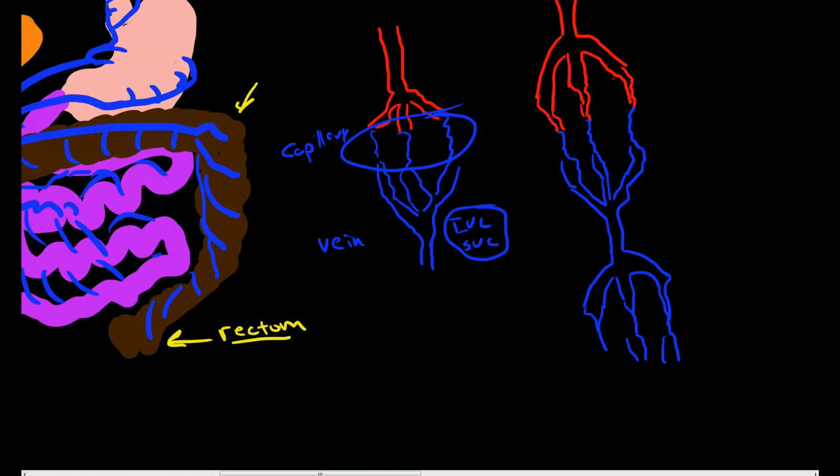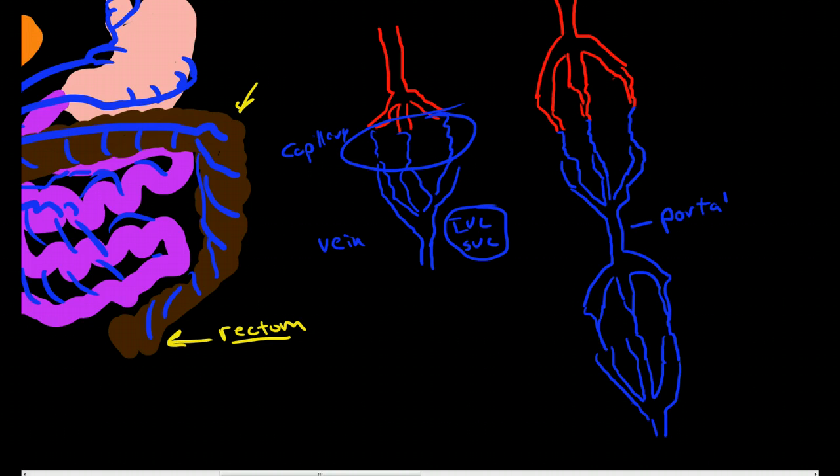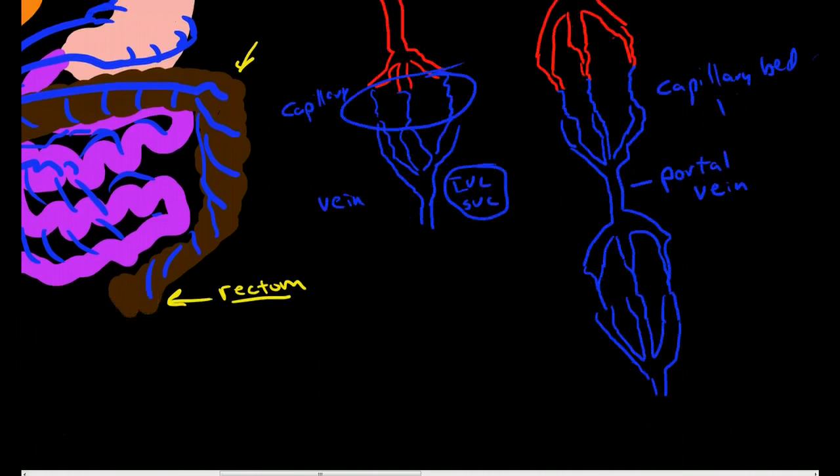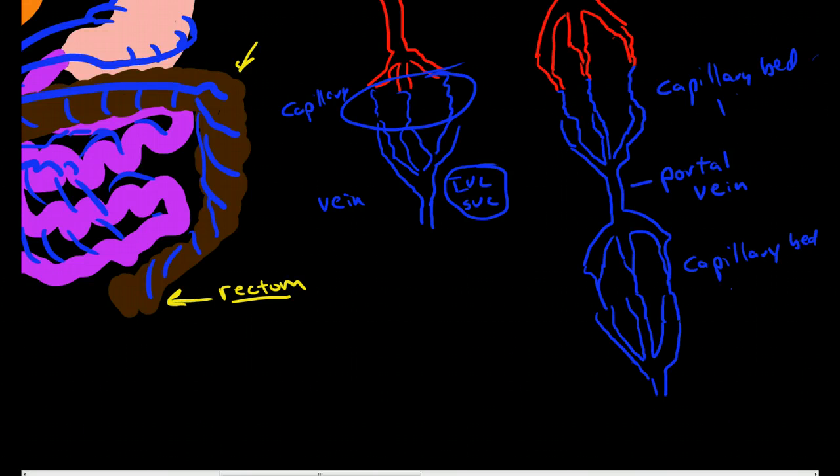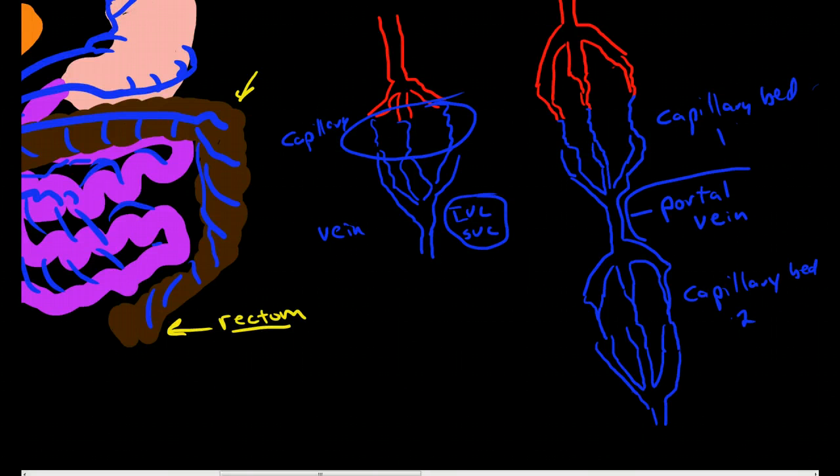And then that second capillary bed opens up into veins again, and then the second capillary bed drains into the inferior vena cava. So we have a portal vein between capillary bed one and capillary bed two. A portal vein is essentially just a vein that lies between two interconnected capillary beds.